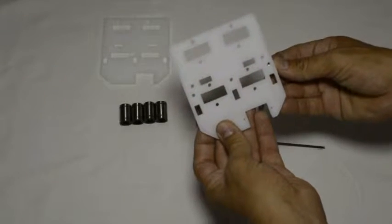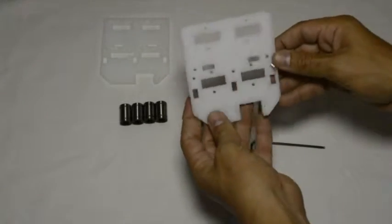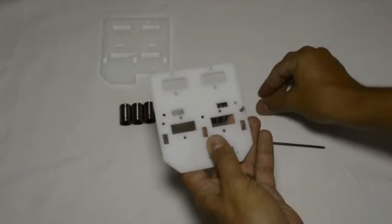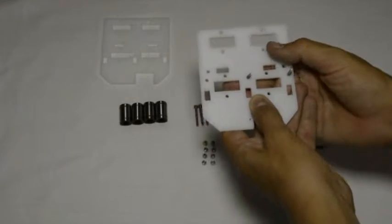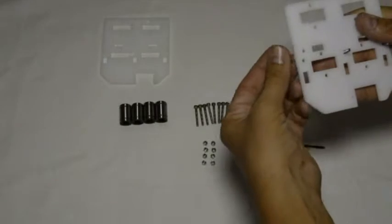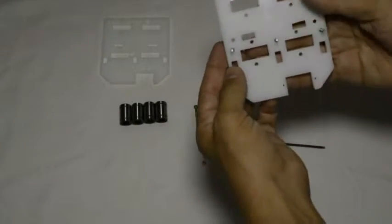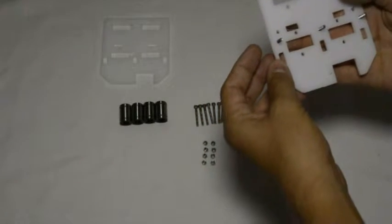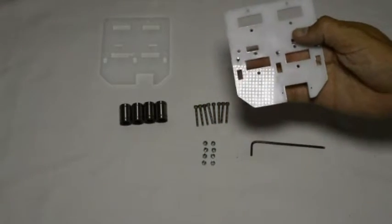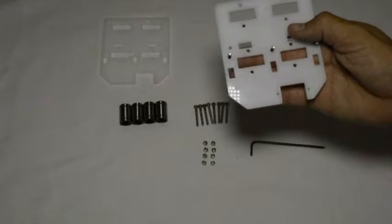So then we will take the M3 by 16 screws and put them in position. They go into those three holes so they mount onto the assembly that we have just done before this one.